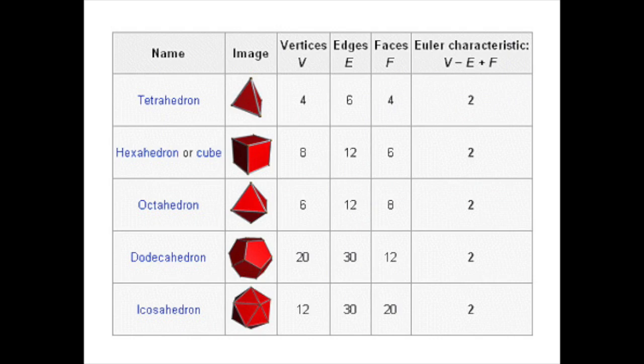There are also polyhedra with an Euler characteristic of zero, making them equivalent to a torus or doughnut shape, and others with negative values. So Euler's discovery was the first way of classifying objects or surfaces in topology. A surface with no holes like a sphere has an Euler characteristic of two; a surface with one hole like a torus has an Euler characteristic of zero; and for every additional hole you add to a surface, the Euler characteristic decreases by two.